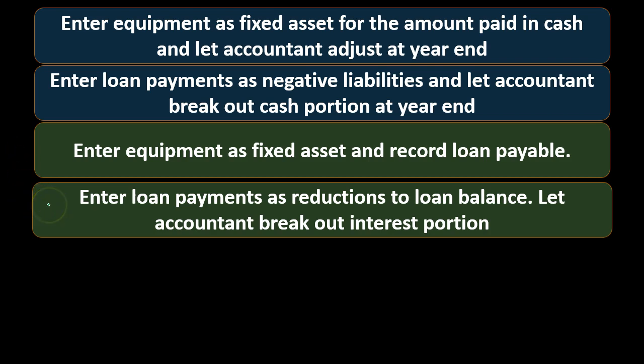In terms of the loan, now we're going to have a liability on the books. Once we have the loan payments, we still have to break out the interest and principal portion. The easiest thing to do, because that interest and principal portion could change over time, is to record the entire loan payment to the loan amount and let the accountant at the end of the year figure out what the interest is as opposed to the principal portion.